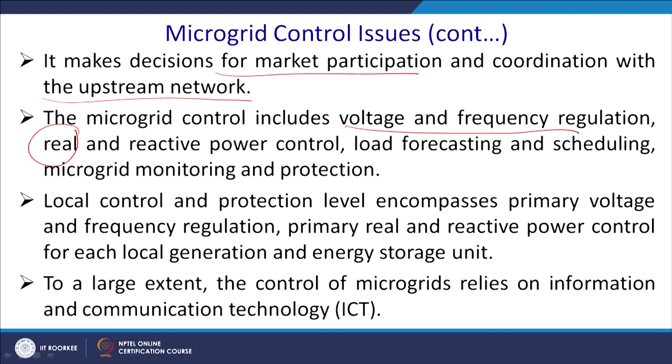Microgrid control includes voltage and frequency regulation. If you are willing to sell power, you are not allowed to sell at different voltages and frequencies — it has to match the grid frequency and desired power factor. For this reason, you require real and reactive power control, load forecasting to know where the peak load will come, load scheduling to shift load where you have excess generation, and microgrid monitoring at both the physical and sensor levels, followed by protections for faults and different aspects.